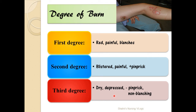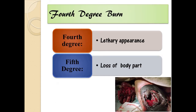In third degree burns, the pinprick test is negative, with dry and depressed skin showing non-blanching lesions, as the nerve endings are completely destroyed. Fourth degree burns involve the fat, muscle, tissue, bone, and ligaments — everything is destroyed — and you may see a charred appearance. Fifth degree burn involves amputation or loss of a particular body part or organ.